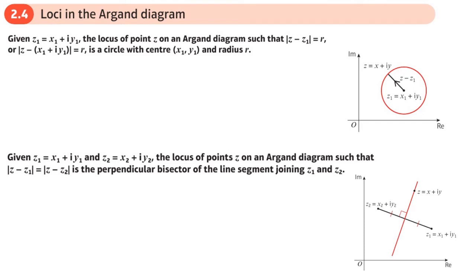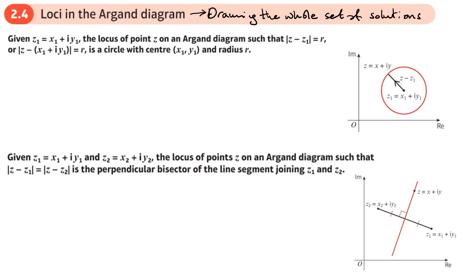This is the full section in the Argand diagrams chapter and now we're going to be looking at loci. We've been solving some complex equations that have a single solution or sets like two solutions — conjugate pairs. But there are some equations which have a whole set of solutions, and when we look at loci in the Argand diagram, we're drawing that whole set of solutions on a diagram.